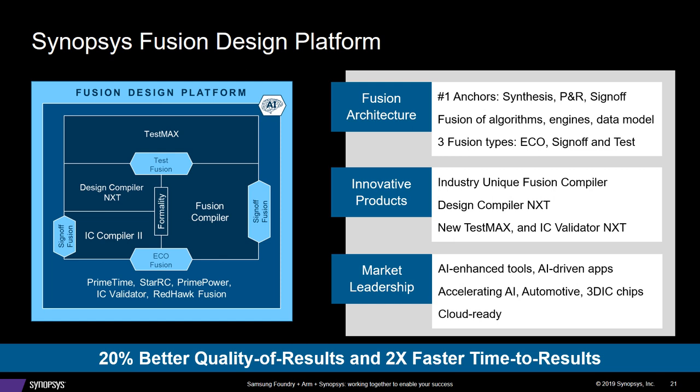There are Fusion interfaces, both at the top and at the bottom. Starting at the beginning with DFT, you have TestMax. And through Test Fusion, we're bringing in and inserting tests, like the compressors, at the very beginning of the flow into the RTL. So the initial synthesis takes advantage of all that and can see the compressors, and the placer can see the compressors from the very beginning.